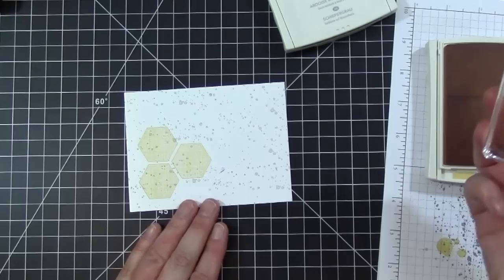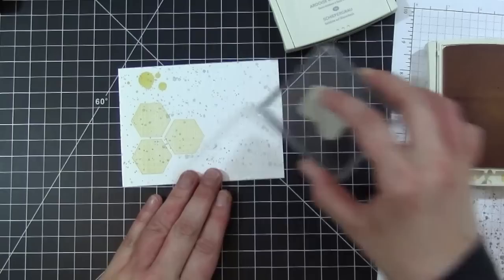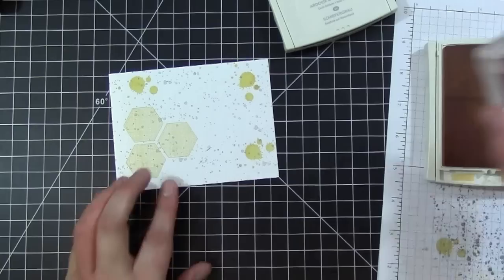I have the other one which is more of a larger splatter and I'm using the So Saffron with this as well. I'm just going to stamp this in a couple places on my background.